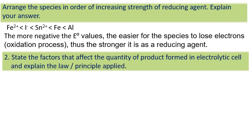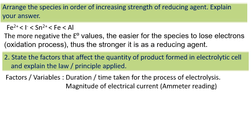Number 2: State the factors that affect the quantity of product formed in electrolytic cell and explain the law or principle applied. The factors or variables are first, duration or time taken for the process of electrolysis. Second, magnitude of electrical current we can determine from ammeter reading.